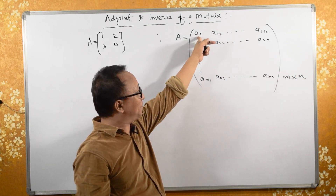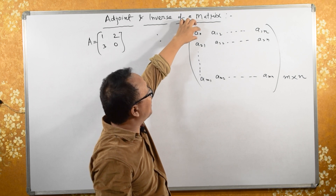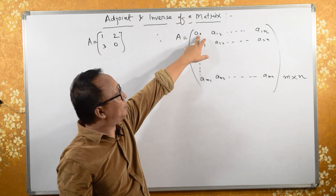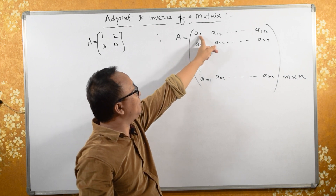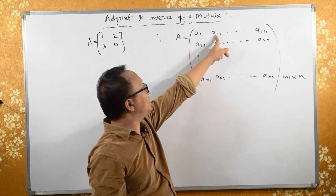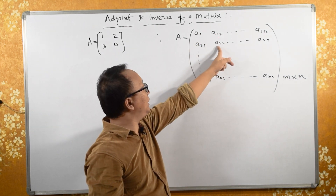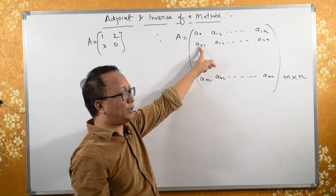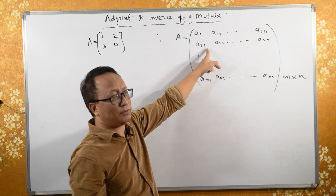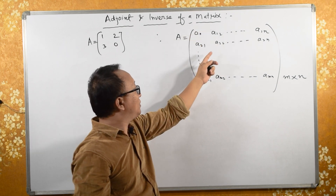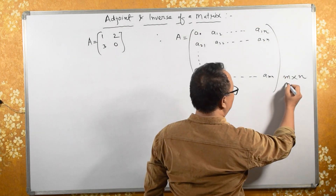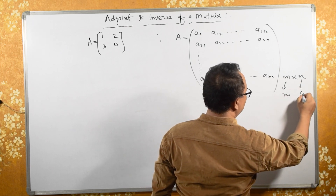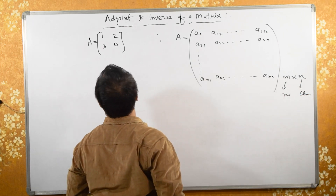Each specific element is located by its row and column. For example, A11 is first row, first column; A12 is first row, second column. A21 is second row, first column; A22 is second row, second column. So M denotes the row and N denotes the column.